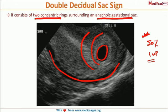Another very important point is wherever these two rings meet, that is where the decidua basalis will be formed, which is the site of future placental formation. These are some important points around the double decidual sac.